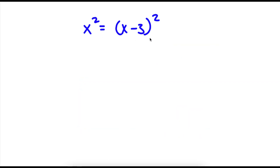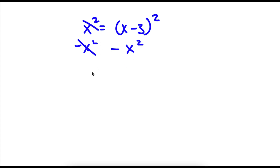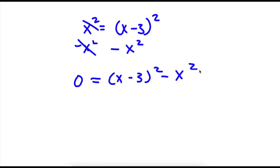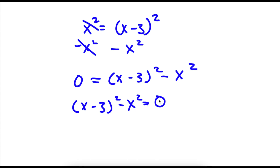Now for the next problem: x squared is equal to x minus 3 squared. I'm first going to subtract x squared on both sides. These two will cancel out, and I will be left with 0 is equal to x minus 3 squared minus x squared. I'm going to rewrite this as x minus 3 squared minus x squared is equal to 0, so the 0 is on the right-hand side.